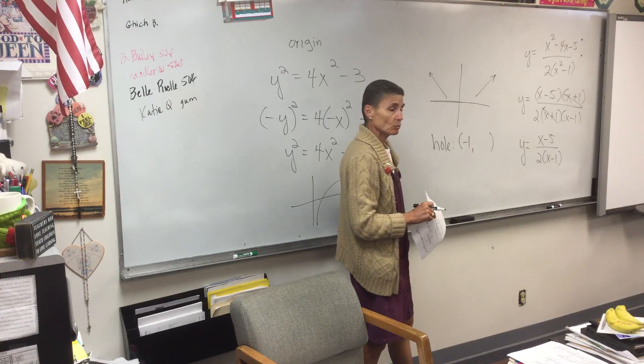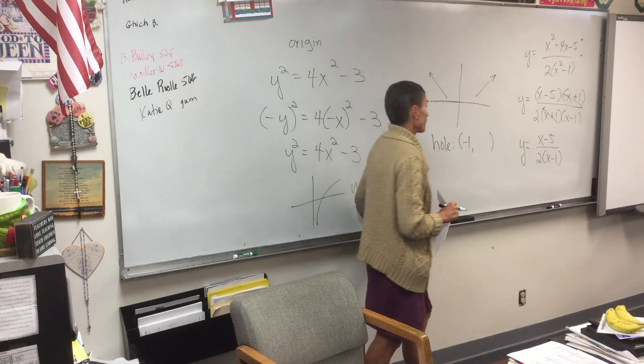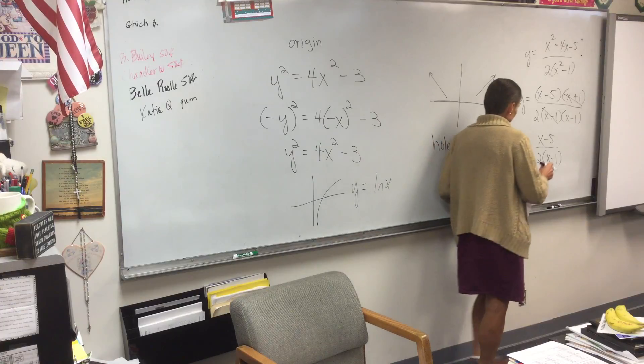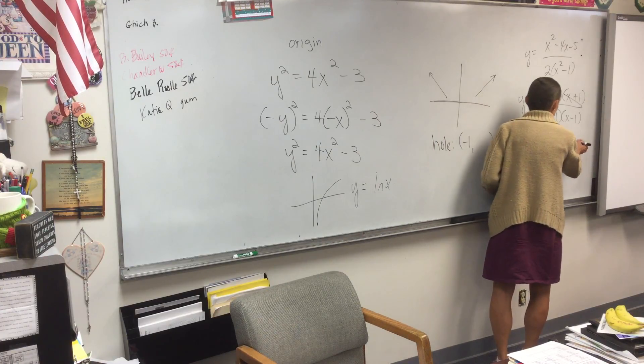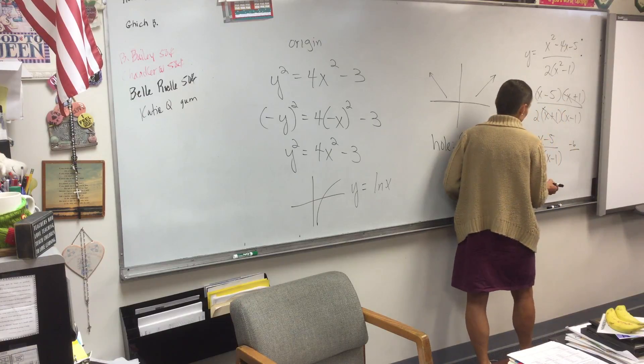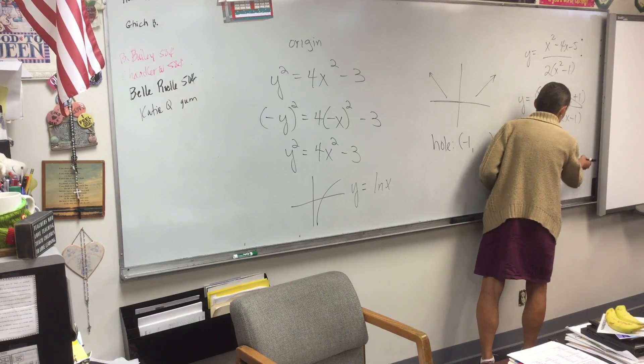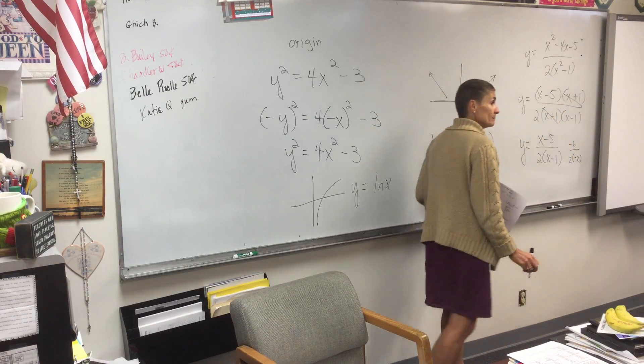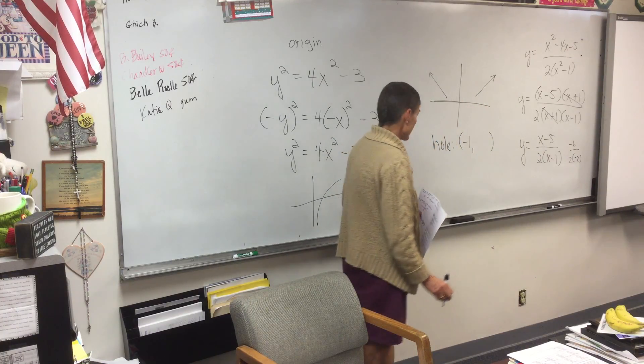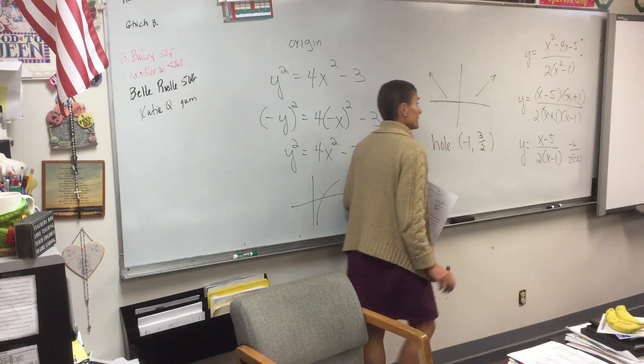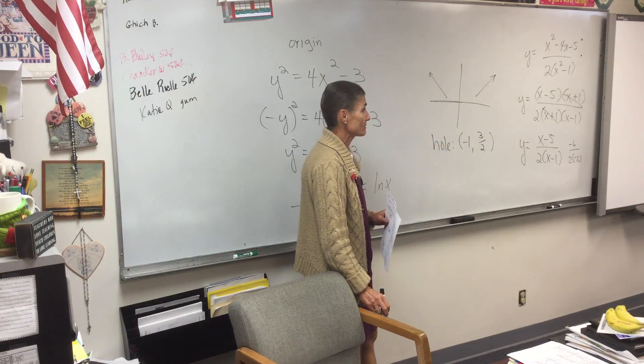Now, how do I get the Y coordinate? You plug in. Plug in negative 1. So plugging in, plug it in here. So that gives me negative 6 on the top and 2 times negative 2 on the bottom, which is 3 halves. So I have a hole at negative 1 comma 3 halves.